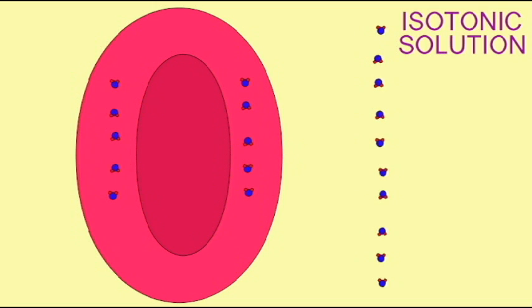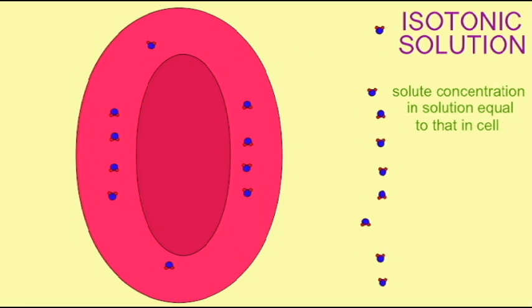When the solution surrounding a cell is isotonic with the cell, that means the solute concentration is the same outside the cell as it is inside the cell.